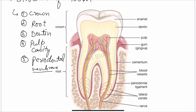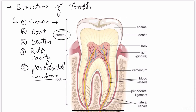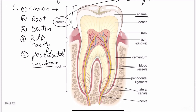Let's discuss the crown. The crown is the exposed portion of the tooth which is covered by a very hard translucent material known as enamel — it is the hardest part. The crown is covered by enamel and it has five surfaces. So it is the exposed part made up of enamel with five surfaces.